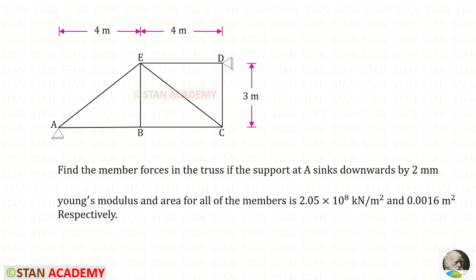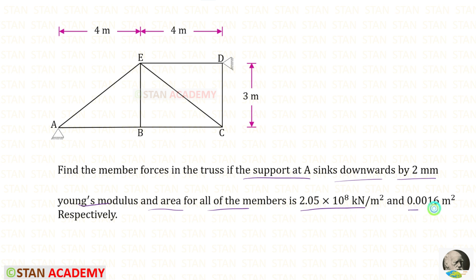Hello everyone. Today we are going to find the member forces in this indeterminate truss. The support at A sinks downwards by 2 mm. The Young's modulus and area of all of the members is the same. Young's modulus is 2.05 × 10^8 kilo newton per meter square and area is 0.0016 meter square. In this truss there is no load.